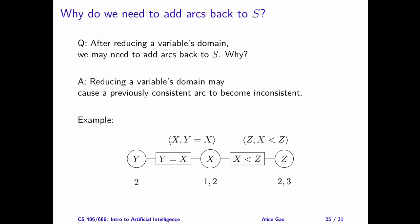Right now, the right arc, Z with X is less than Z, is consistent. But the left arc, X with Y equals X, is not consistent. Let's verify this quickly. For the right arc, Z with X is less than Z, if Z is 2, we can choose X equals 1, and X is less than Z. If Z is 3, we can choose X equals 2, and X is less than Z. Therefore, the arc is consistent.